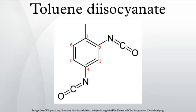Distillation of the crude TDI mixture produces an 80-20 mixture of 2,4-TDI and 2,6-TDI, known as TDI-80. Further differentiation or separation of the TDI can be used to produce pure 2,4-TDI and a 65-35 mixture of 2,4-TDI and 2,6-TDI, known as TDI-65.